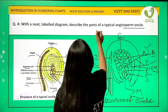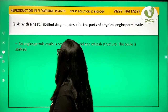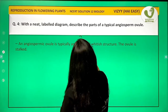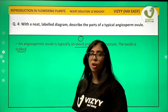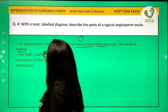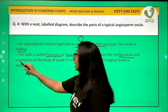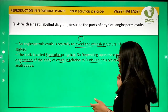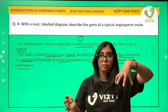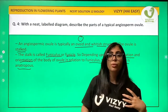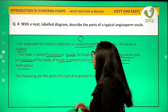Now going ahead, we need to describe the parts of the angiospermic ovule. An angiospermic ovule is typically ovoid in shape — somewhat oval, whitish in color. The ovule has a stalk called the funiculus. Depending upon the configuration and orientation of the body of the ovule in relation to the funiculus, the typical ovule is anatropous, which means inverted.